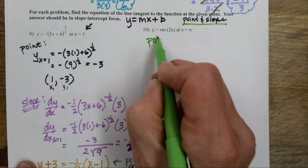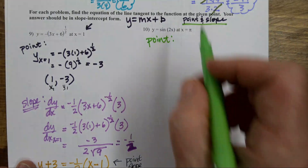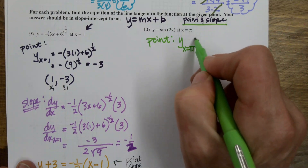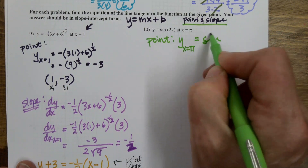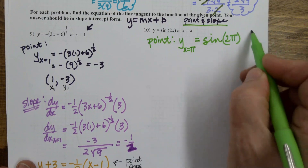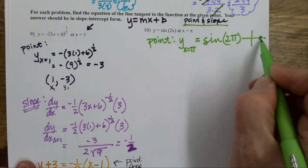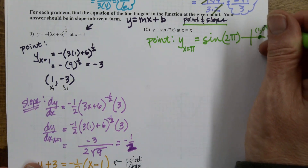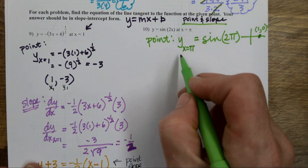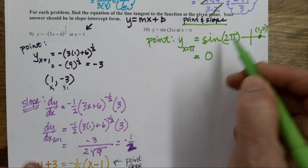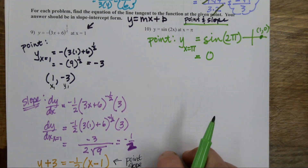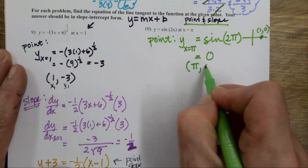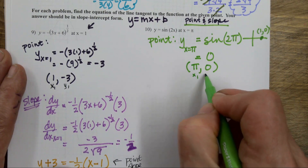I'm going to start by finding the point. I want to evaluate y when x is pi. That is simply the sine of 2 pi. Sine of 2 pi — that's the point 1 comma 0 on the unit circle; the sine at that position is 0. So the point that I'm going to be using is pi comma 0. That's my x1, y1.